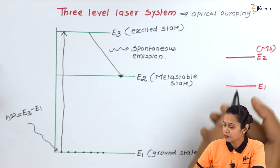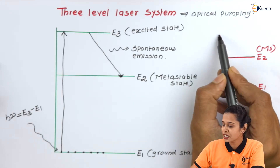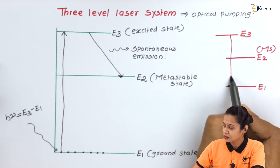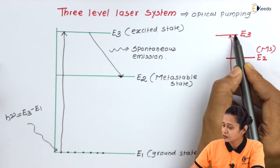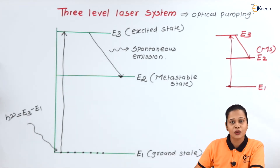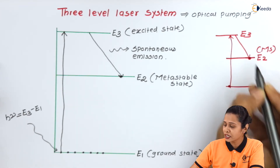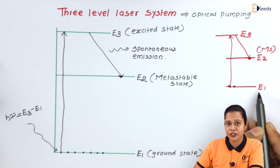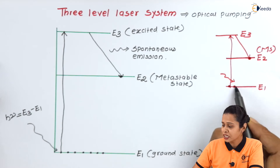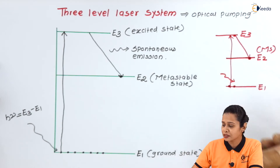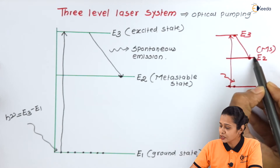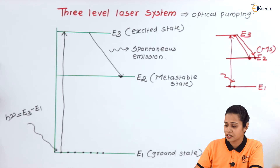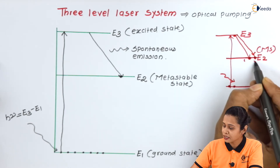The first particle of the system will absorb energy and jump into the energy level E3, and then it will come back to the energy level E2. This particle will spend some time here. By that time, another particle present in E1 will absorb h-nu amount of energy and jump into the excited state, then again come back to the energy level E2. This is the second particle of the system.